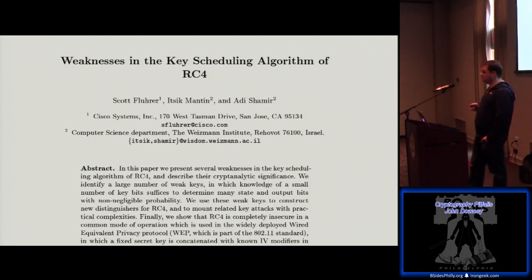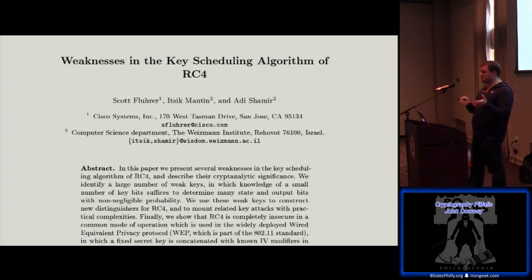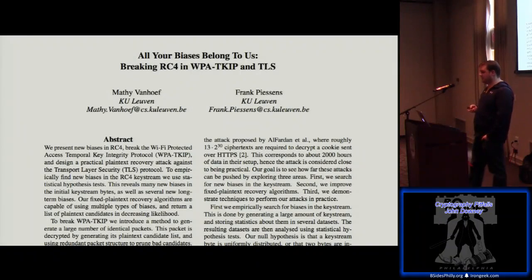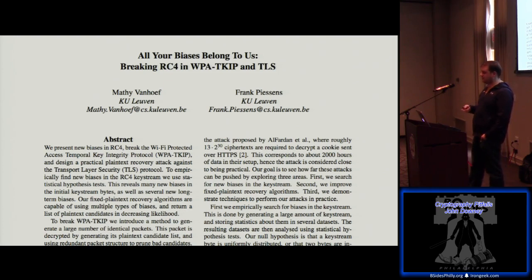The next pitfall: weaknesses in the scheduling algorithm of RC4, presented in 2001. It was saying, hey, RC4 is not really ideal — and yet up until about two years ago people were still using RC4 in their TLS configurations because it was the only recommended way to combat the BEAST attack that everybody was scared of. It actually took a different paper in 2015 that really hammered in that RC4 was broken in things like TLS to get people to finally move off it and get vulnerability scanners like Qualys to start flagging it as a vulnerability.